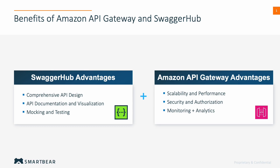Mocking and testing: SwaggerHub also enables developers to generate mock APIs based on the API design, allowing them to simulate endpoints and responses for testing purposes. This allows us to test and develop the API asynchronously. Amazon API Gateway has some great strengths in scalability and performance. The gateway provides a scalable and reliable platform for hosting and managing APIs with features like caching, rate limiting, and throttling. Security and authorization: the gateway offers robust security features including authentication, authorization, and encryption to protect APIs from unauthorized access.